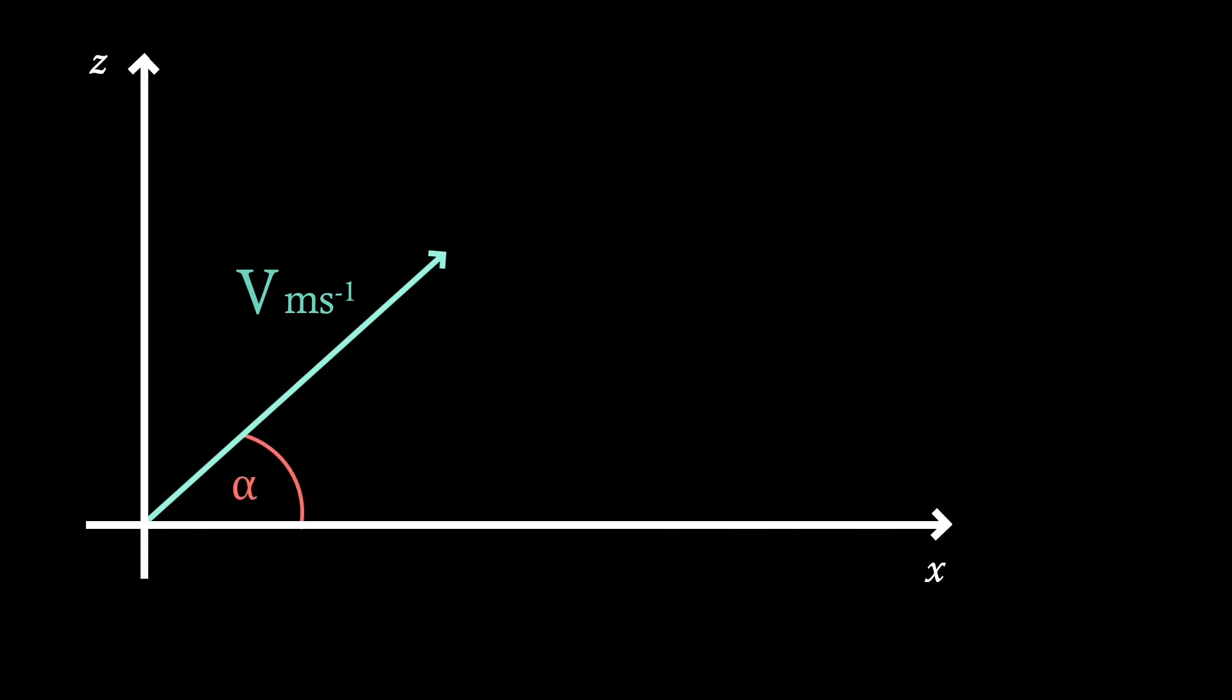Well firstly we need to think about what forces are involved. In our model here we're going to assume there's no air resistance, which means that we're only left with a gravity force. Now if we actually project our particle we see you get this arc shape. Our goal now is to find the curve which forms this arc.